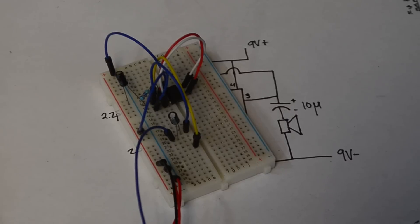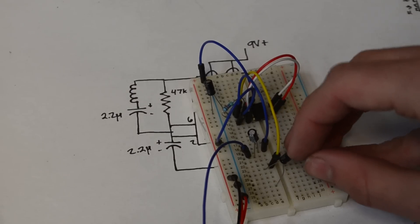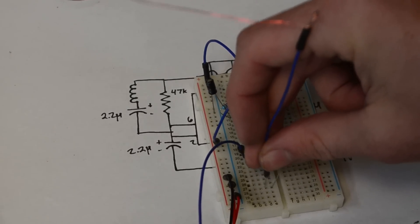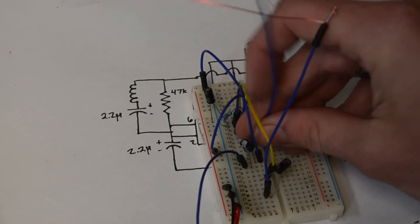And so now going back to our circuit let's connect it all up. So to pin 2 I'm going to insert this 2.2 microfarad capacitor and then I'm going to connect the coil we wound to one end of that capacitor and the other end is going to be connected back up to pin 3.